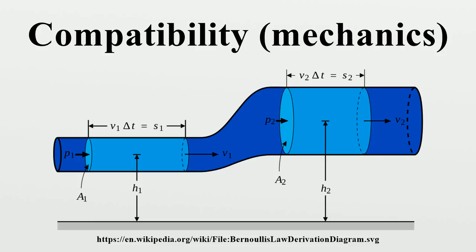From Stokes' theorem, the integral of a second-order tensor along a closed path is given by using the assumption that the curl of the tensor is zero. Hence the integral is path independent and the compatibility condition is sufficient to ensure a unique field, provided that the body is simply connected.